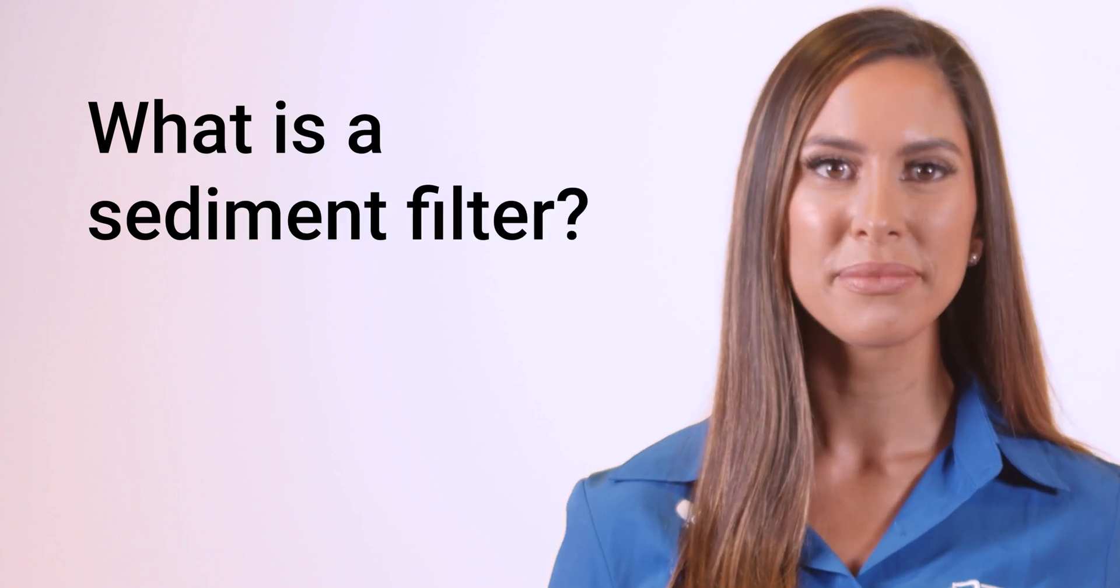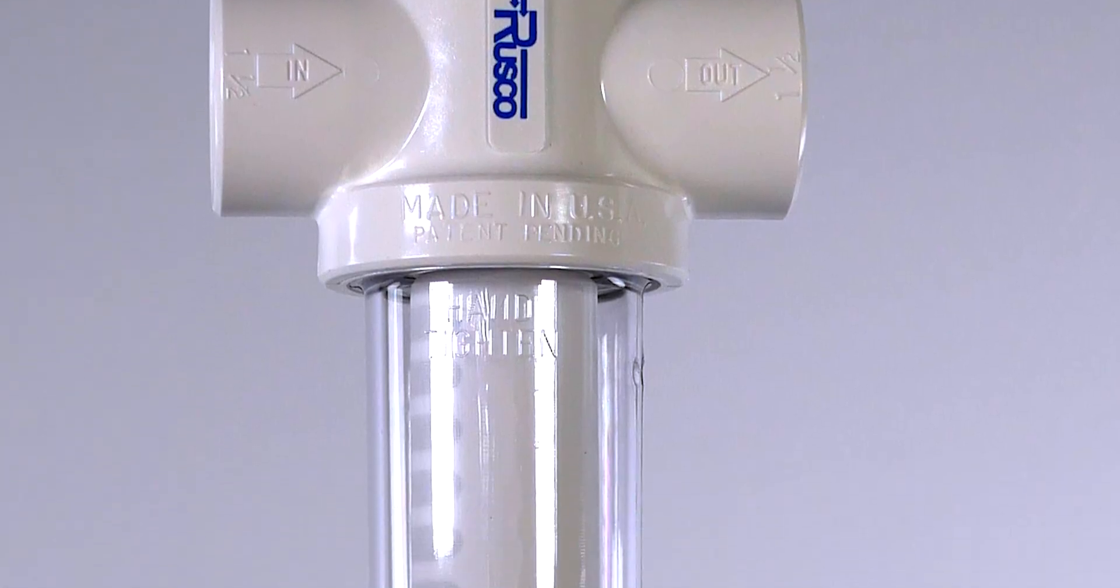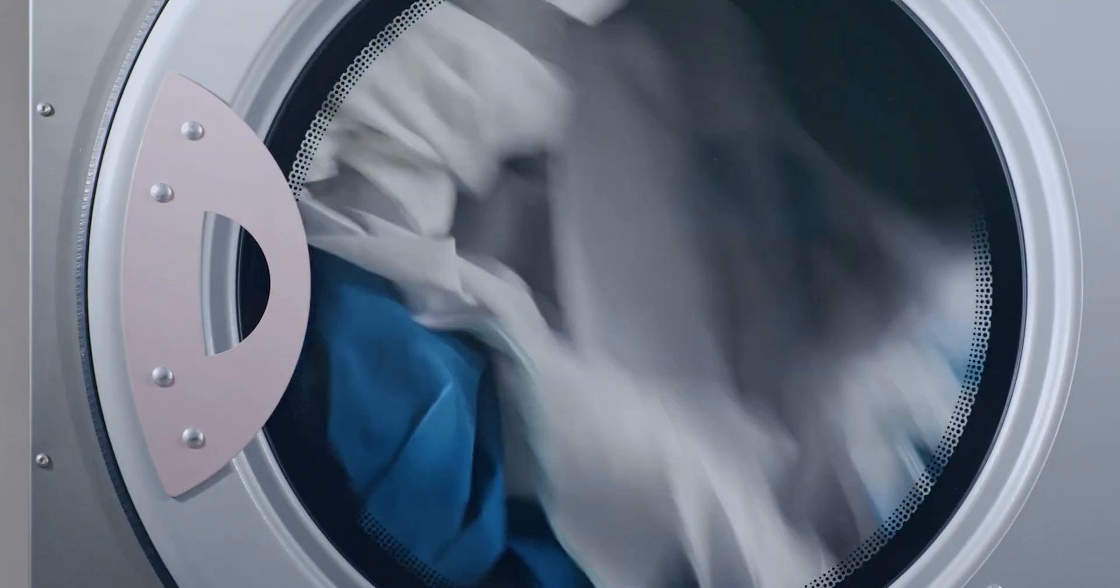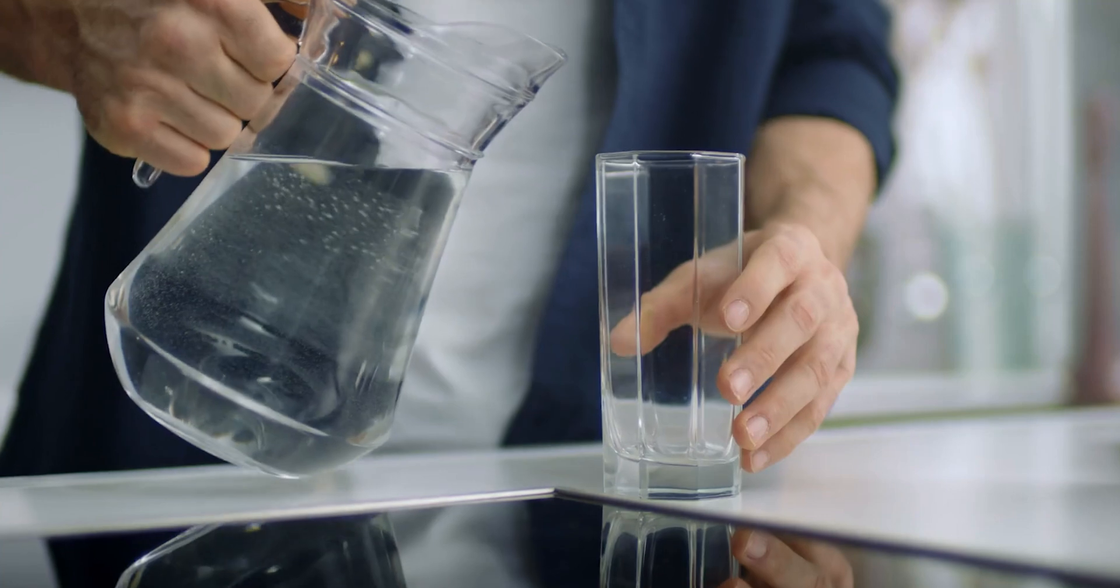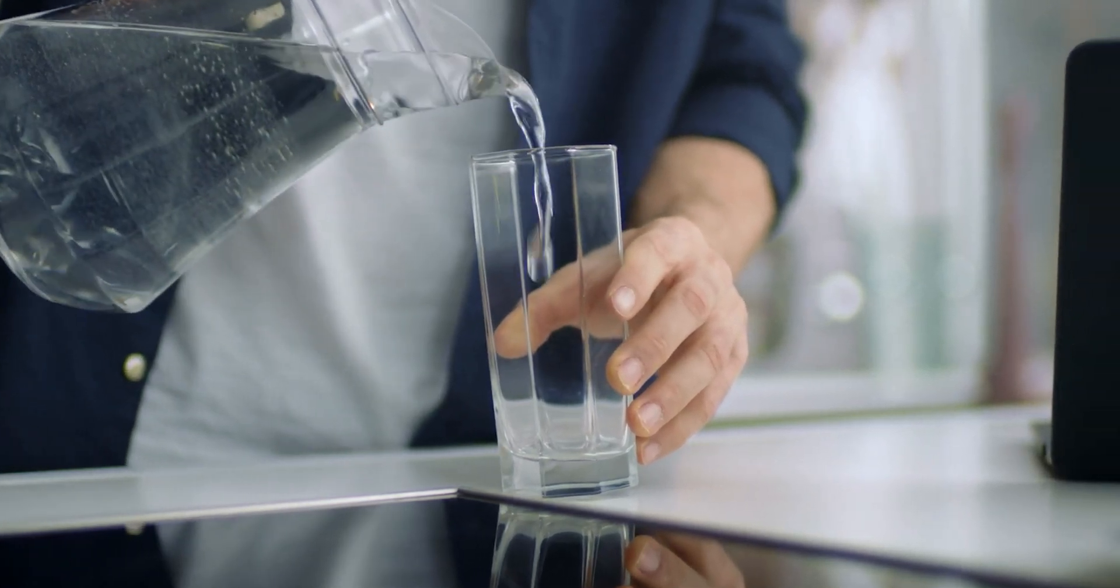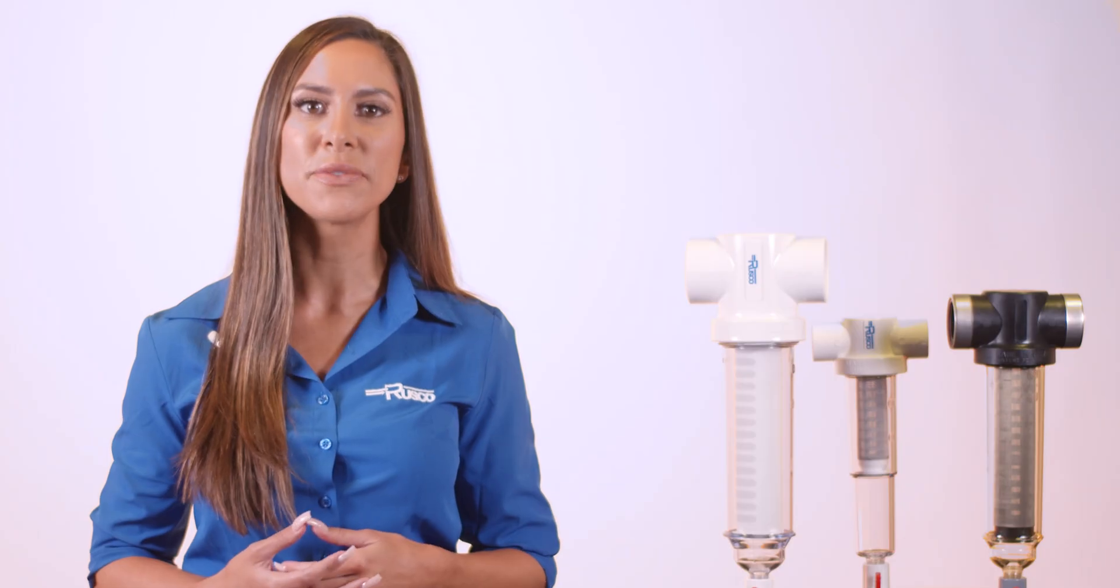But maybe you're asking, what is a sediment filter? A sediment filter catches particles like dirt and debris in your water before it passes through your expensive appliances, your home's pipes, or before the water gets to your drinking glass. Think of it as your home's first line of defense for its water filtration system.